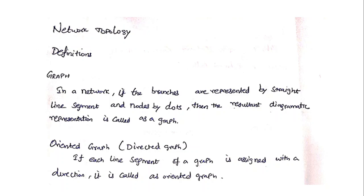Hello, today we are going to discuss network topology. In network topology, we will draw the graph for the circuits or network which is given. Once the graph is drawn, from the graph we will draw a tree. Using the tree, we will be computing the node voltages and branch currents — anything can be found out from the tree.